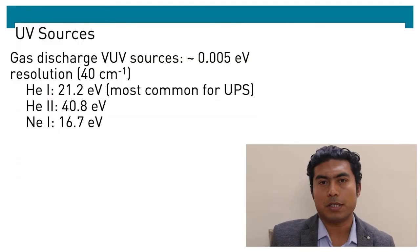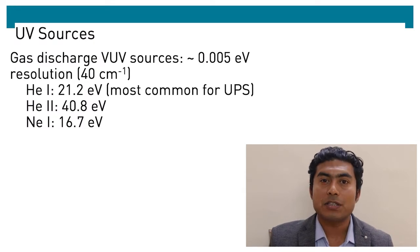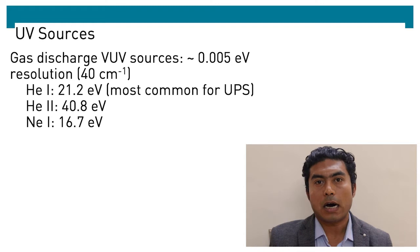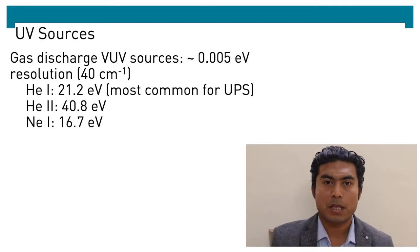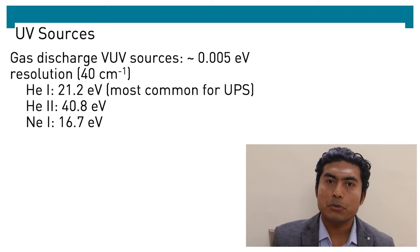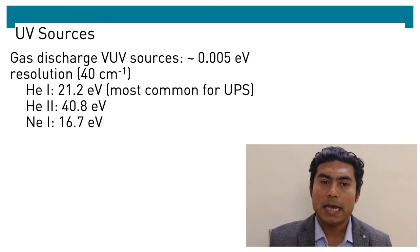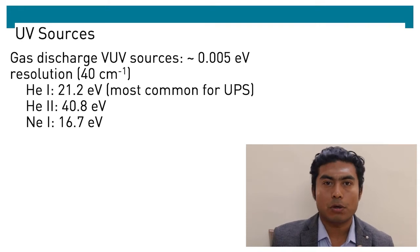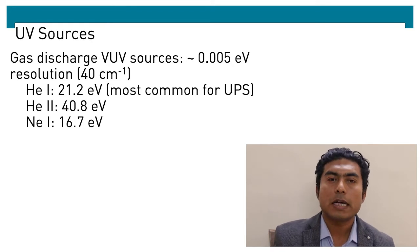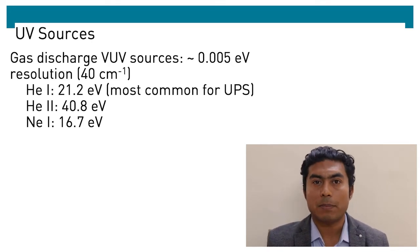Let us discuss the sources. Generally, gas discharge lamps of inert gases are used for ultraviolet sources. Helium-1 line has energy of 21.2 eV and helium-2 line has energy of 40.8 eV. Neon gas is also used which produces neon-1 line with energy of 16.7 eV, and also krypton and other inert gases can be used.